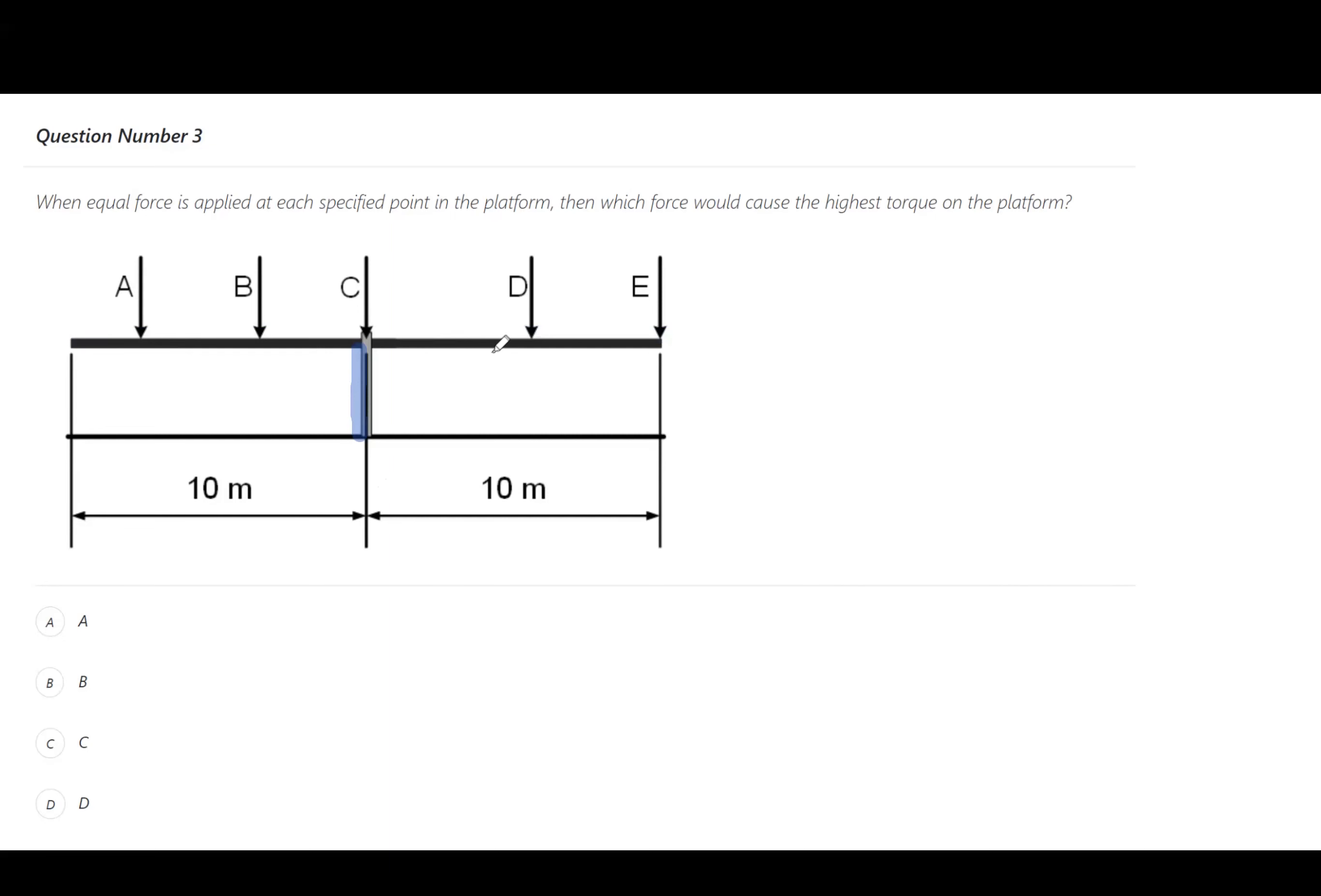So our rule with torque is that you have more torque the further you are away from the pivot point. So E here would have the highest torque because it's the furthest away from the pivot point, which is this balancing part here.